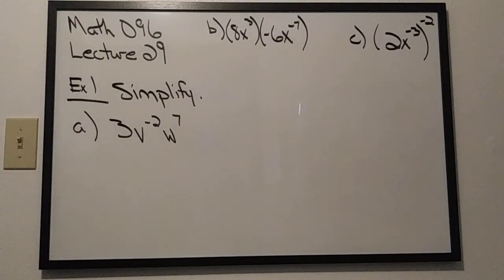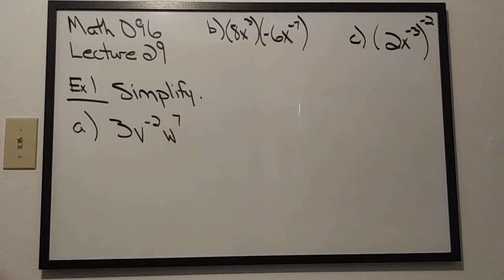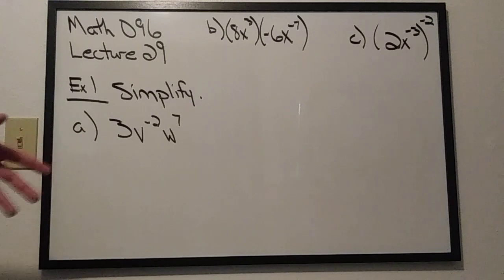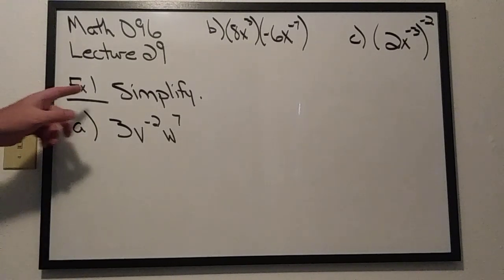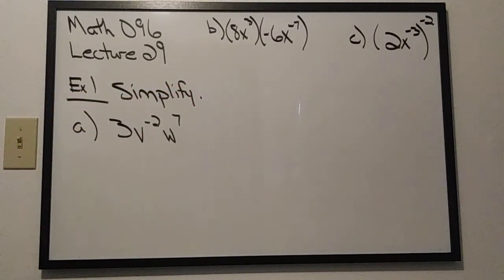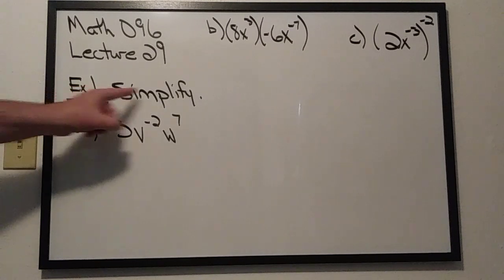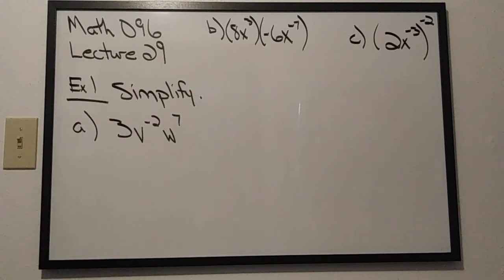Welcome to Math 096, Lecture 29. Today we are going to start off by continuing the conversation about Section 5.2. You'll notice in Example 1 the directions say 'simplify,' and in parentheses 'write your answer using only positive exponents.' From this point forward in the semester, whether that second sentence is written or typed on a quiz, exam, or worksheet, you know those directions are there. Simplify always means your final answer should be written with no negative exponents.